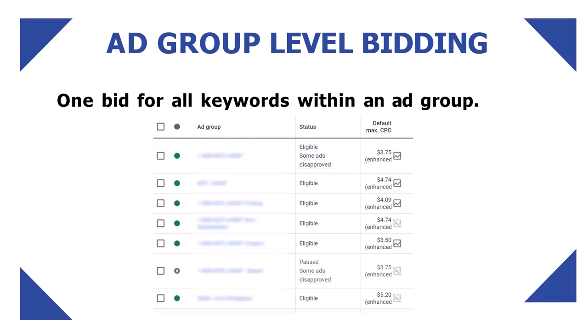On the other hand, bidding at the ad group level can be beneficial because it allows you to apply the same bid to all keywords within an ad group. This can be useful if you want to prioritize certain ad groups over others. This strategy can save you time and effort in managing your campaign and simplify your bidding process.